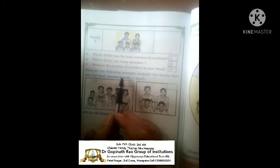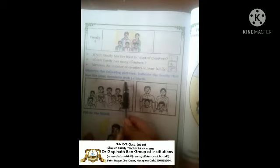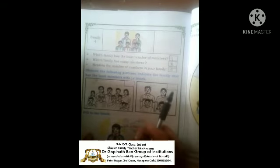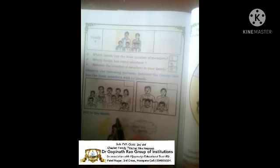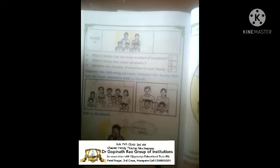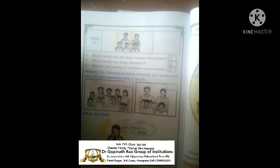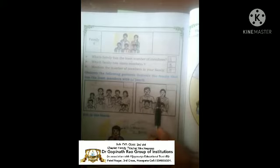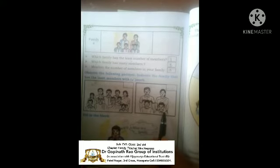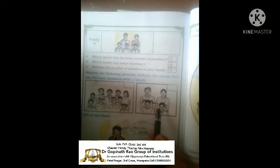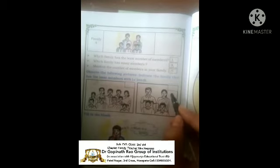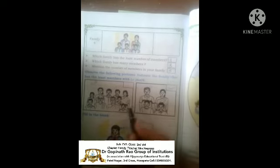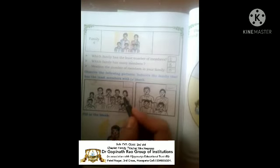Next, observe the following pictures and indicate the family that has the least members with a right mark. A family with the least members is called a small family. And a family with many members is called a large family. So if your family is a small family — for example, father, mother, your sister and you — that is a small family. Or if your family is a joint family or big family, you mark that accordingly.